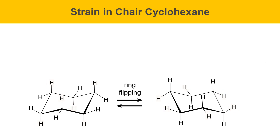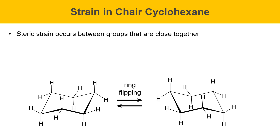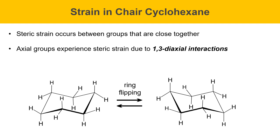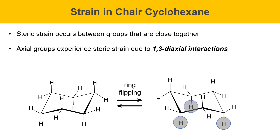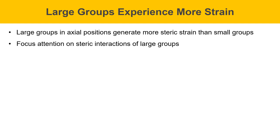Steric strain occurs between groups that are too close together. Axial groups experience steric strain due to something called a 1,3-diaxial interaction. The upper axial positions interact with each other, and these protons are particularly close together — their electron clouds interact and repel. The same is true for the axial positions on the bottom. Large groups experience more steric strain than small groups, so it's important to focus your attention on steric interactions of large groups, as large groups create big problems.